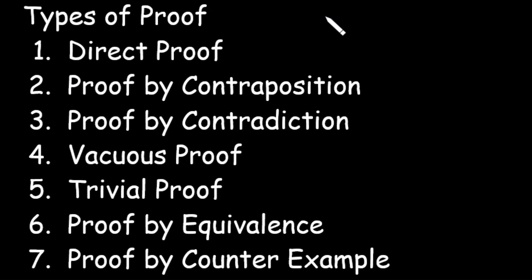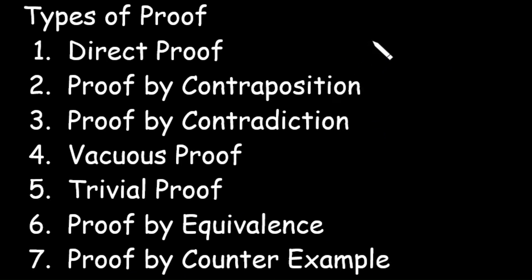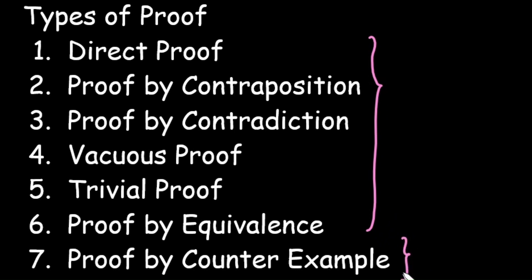Basically there are seven types of proof we are going to deal with in this lecture series. First is direct proof, second is proof by contraposition, third is proof by contradiction, fourth is a vacuous proof, fifth is a trivial proof, next is proof by equivalence, and the last is proof by counter example. The first six proofs are used to prove a statement is true, whereas the seventh proof is used to prove a statement is false. In this video we will cover only direct proof.